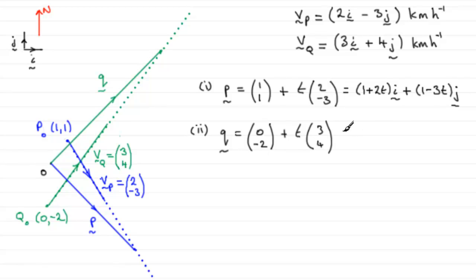And as for Q, well, that's going to be 0 plus 3t in the i direction or just simply 3t i. And for j, it'll be minus 2 plus 4t. Or you could write it as 4t minus 2 in the j direction. Okay? So, that's parts 1 and 2 then.